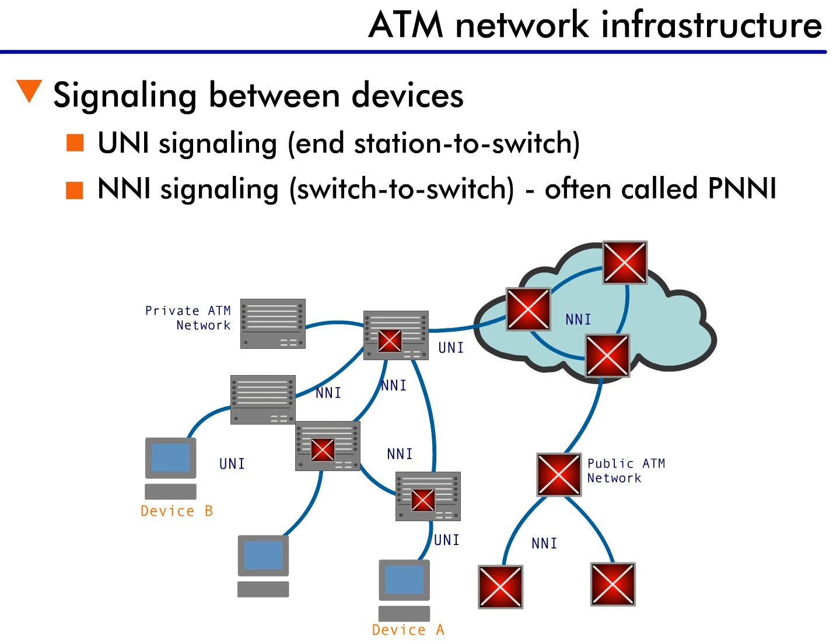Two types of signaling are used in ATM communication. One type, called user-to-network interface, or UNI signaling, allows end stations to communicate with their local switch.